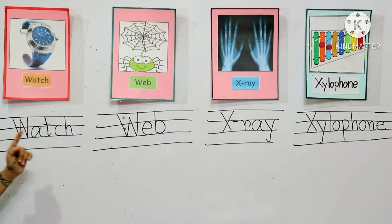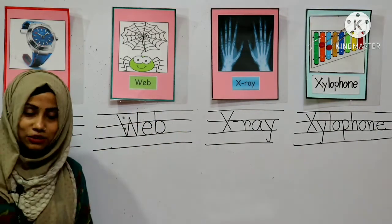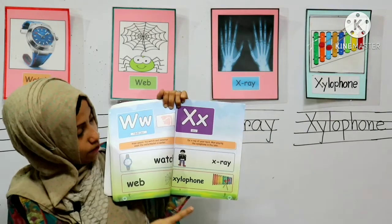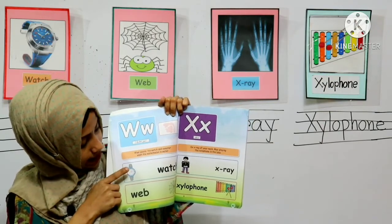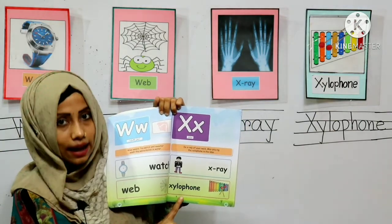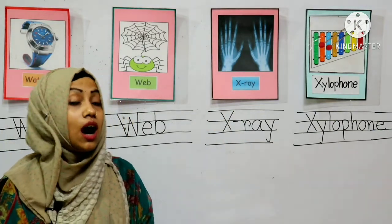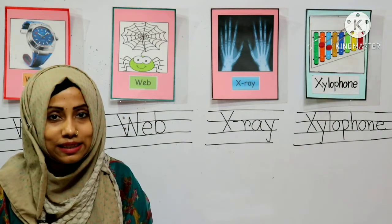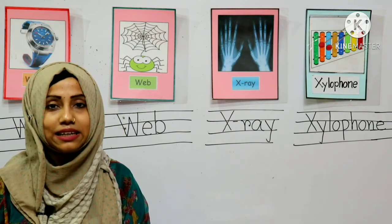Students: watch, web, x-ray, xylophone. English main book, page 40 and 41. Can you see the words? Yes — watch, web, x-ray and xylophone. Students, write these words in your English copy. How many times? Three times. You will also memorize these words. Okay students, Allah hafez. Take care. Bye bye.